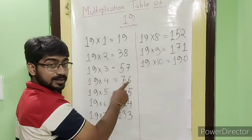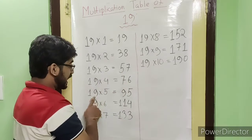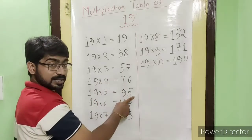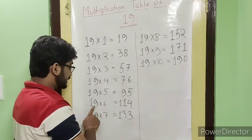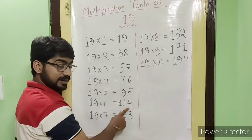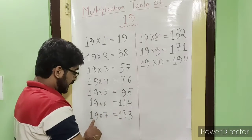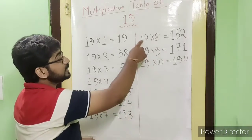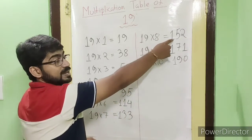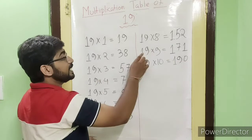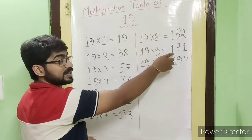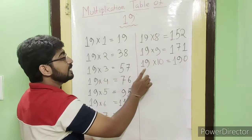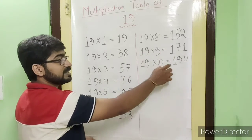Okay, so now it's your turn. 19 ones are, 19 twos are, 19 threes are, 19 fours are, 19 fives are, 19 sixes are, 19 sevens are, 19 eights are, 19 nines are, 19 tens are.